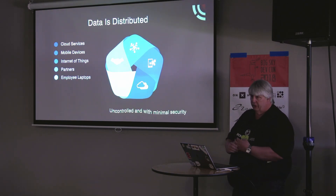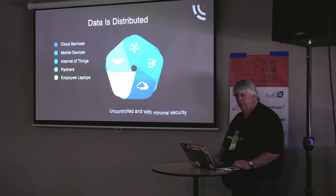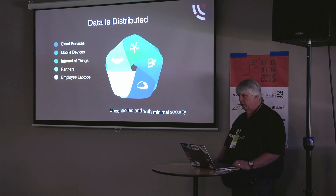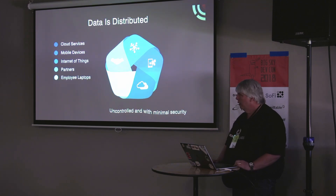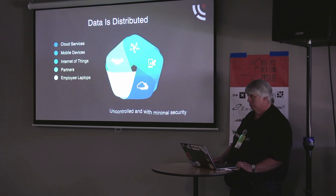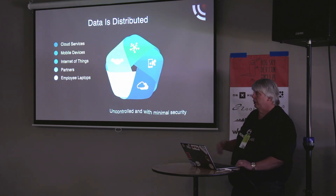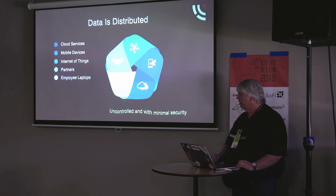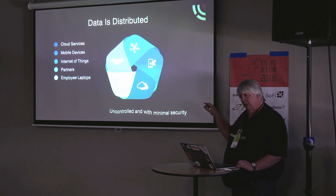We're probably all pretty familiar by now with the fact that in this day and age data is really distributed all over the place. We store our data in cloud services whether we want to or not. I'm not sure if I could even tell my phone to stop sending every picture I take up to Google. We use mobile devices to generate and consume data all the time. The Internet of Things, whether we like it or not, is generating data all over the place and sending it to places we're not even sure of. We ship our data to partners to process. We download and generate data on employee laptops, and a lot of these places don't have very good security.